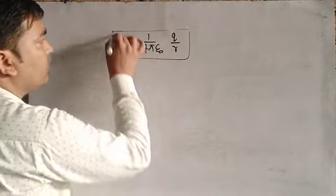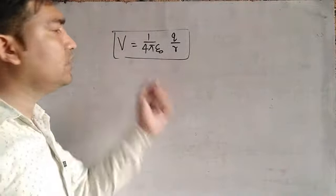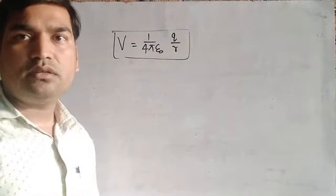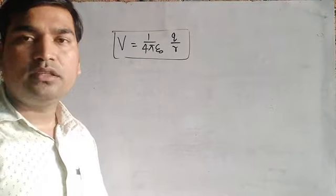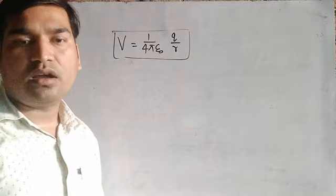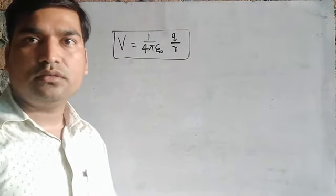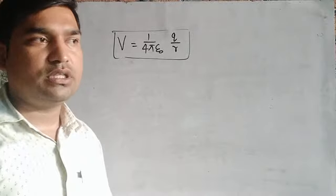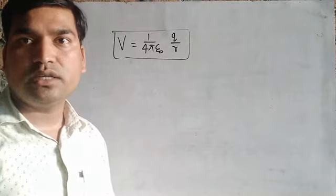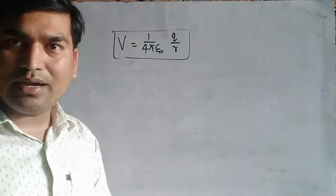Electrostatic potential is a scalar quantity. That is why whenever two or more than two charges are placed in a surrounding, the electric potential due to these multiple charges is the algebraic sum of the total potentials due to individual charges. We use algebraic sum because electrostatic potential is a scalar quantity, and scalar quantities are added algebraically.